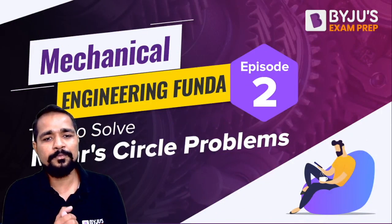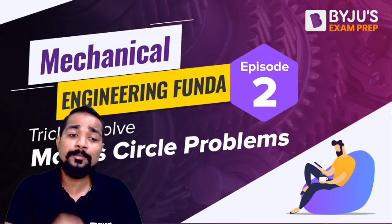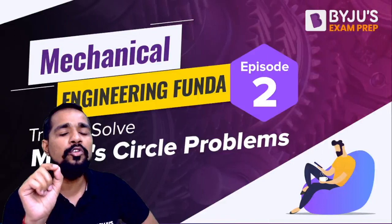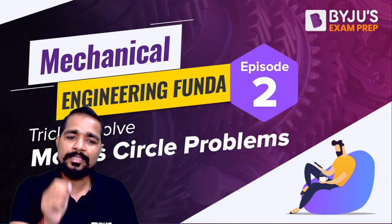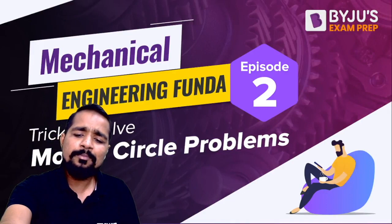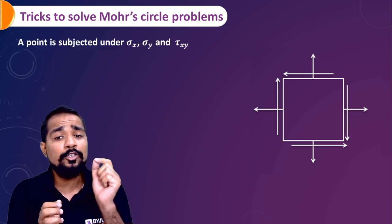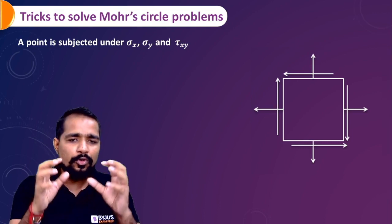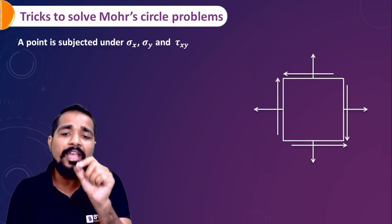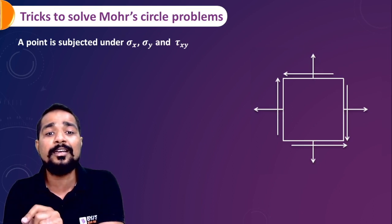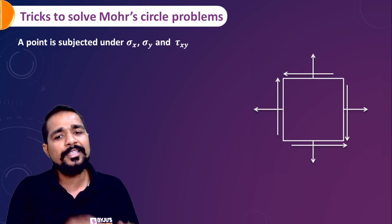Hello everyone, I hope you all are doing well. This is the second episode of Mechanical Engineering Funda. In the first episode we discussed a very important trick to find the number of zero-force members. This second episode is completely related to the topic of Strength of Materials — specifically a trick to solve Mohr's Circle problems, so you can solve many problems even without drawing the Mohr's Circle.